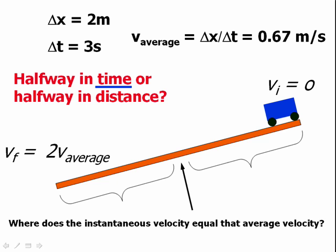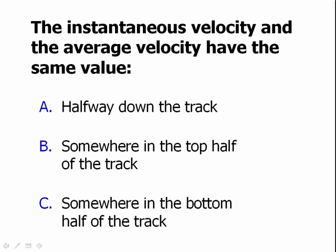You now have everything you need to answer the question. The instantaneous velocity and the average velocity have the same value: A, halfway down the track, B, somewhere in the top half of the track, or C, somewhere in the bottom half of the track. Did you change your answer?